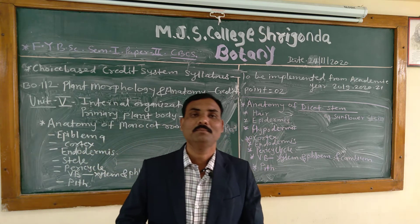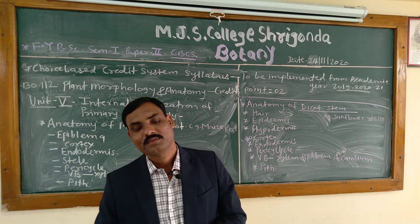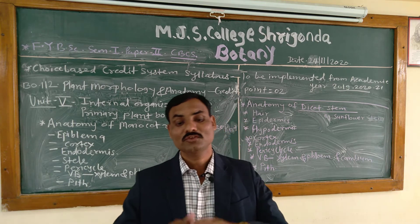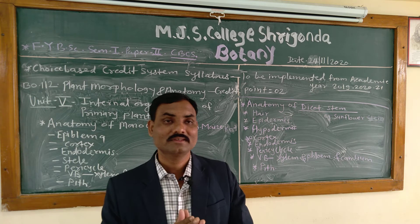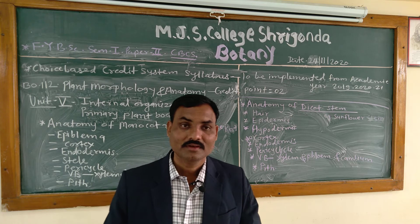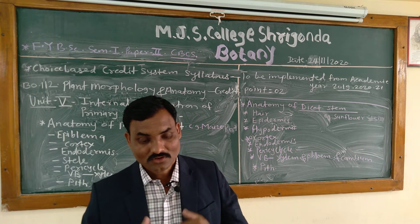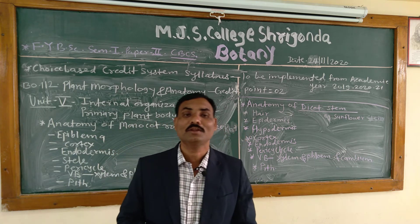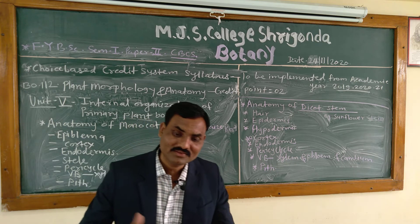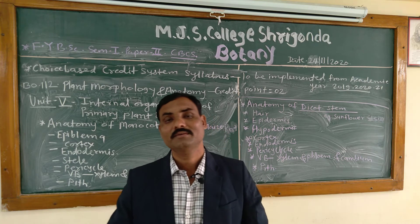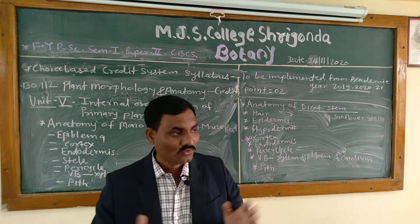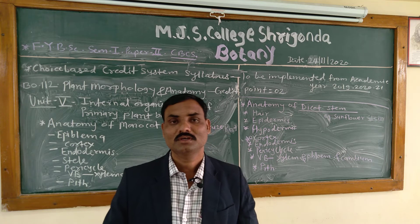Next to the epiblema is the cortex. The cortex is multilayered, parenchymatous, with large intercellular spaces. Next to the cortex is the endodermis, which has very thick cells without Casparian strips. Cells without Casparian strips are called passage cells and they provide passage to water.